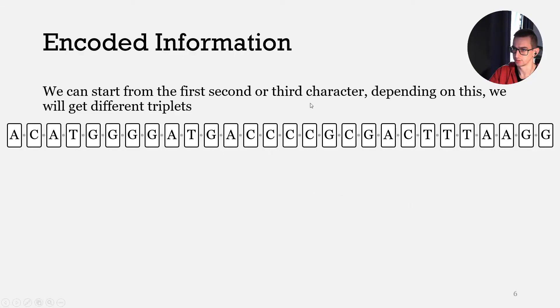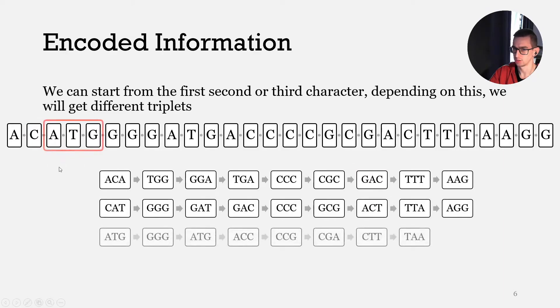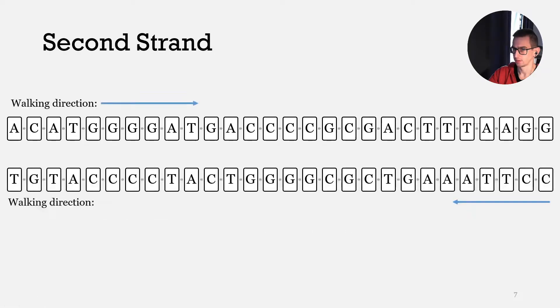We can start from the second character or the third character, and depending on this we will get different sequences. So it's our first sequence. If we start from this triplet we will get the second sequence, and the last one if we start from this triplet ATG.